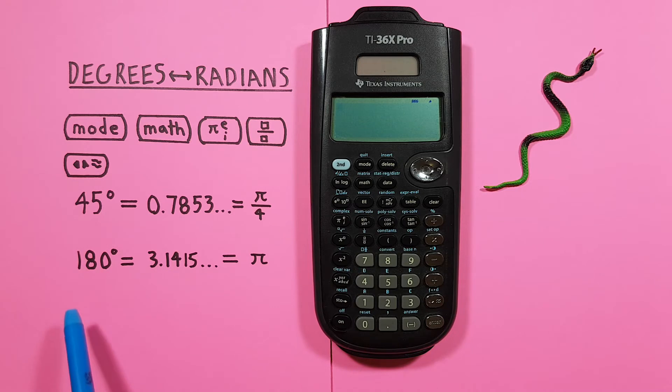Another example. Let's say we were given 180 degrees and wanted to convert that to radians. We start by setting our calculator to radians mode.